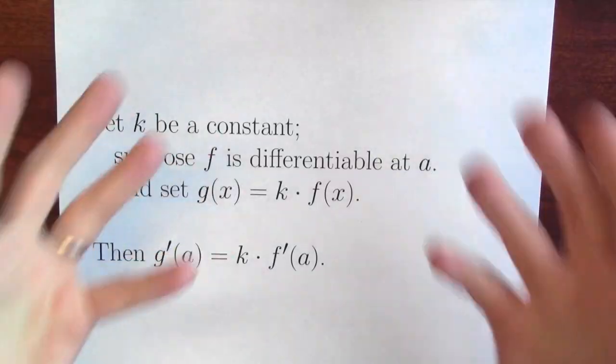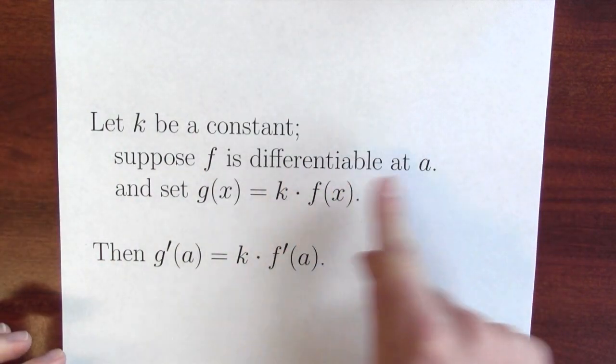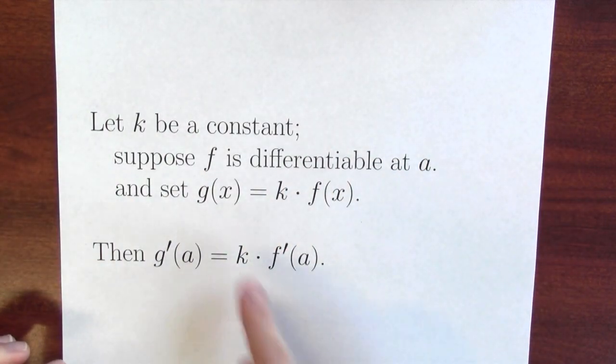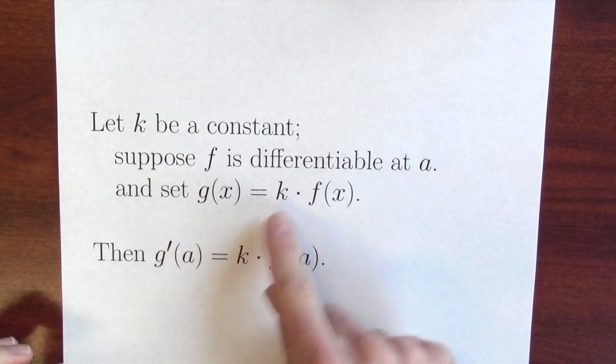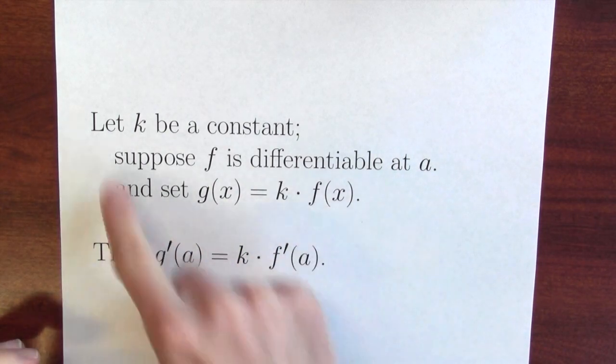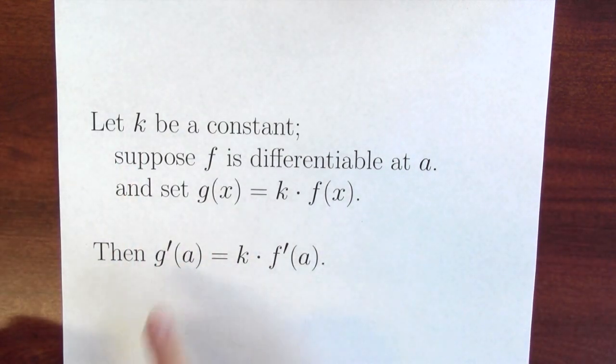We can formalize this as a rule. Here's the constant multiple rule. So let k be a constant and suppose that f is just some function which is differentiable at the point a. G is that constant multiple of f. So g of x is k times f of x. Given this setup, what the constant multiple rule is concluding is that the derivatives are related in the same way. The derivative at the point a is k times the derivative of f at the point a.